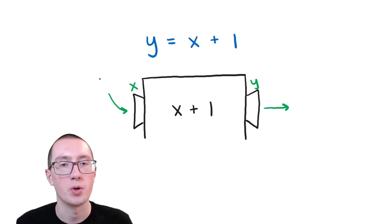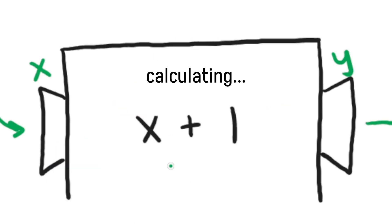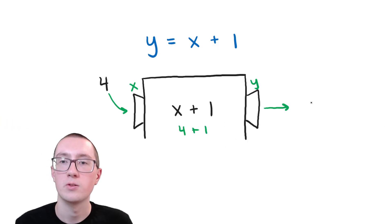So for example, what happens if I put the number four into this machine? Well, basically, the number four is going to go inside, and then it's going to do its little calculations. It's going to go, okay, you put in four for x, so four plus one. Four plus one is five. So the machine is going to spit out five when I put in four.